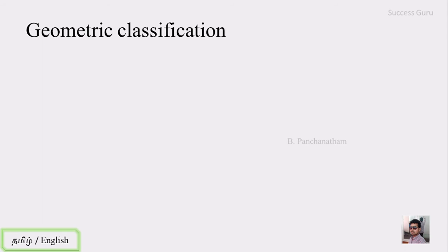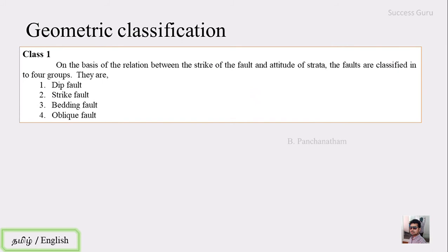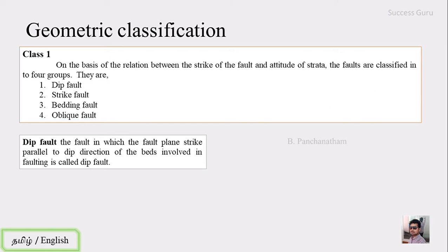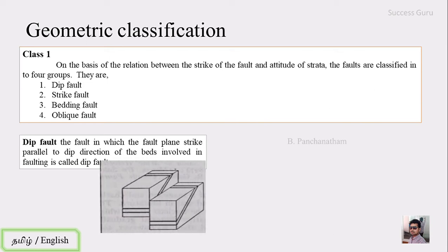Now let's get into the geometric classification. The first classification is based on the relation between the strike of the fault and the attitude of the strata. Remember, this classification is only for stratified formations because strata must have strike and dip. The dip fault is one in which the fault plane strikes parallel to the dip direction of the beds involved in faulting.